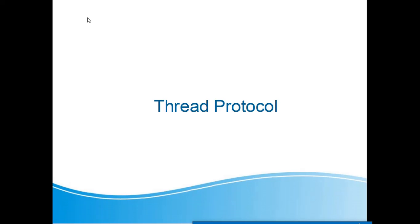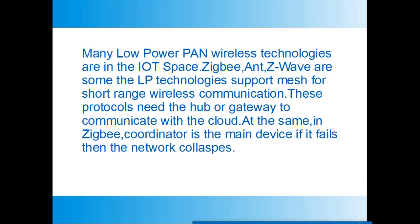Welcome back. Today we are going to see what is Thread Protocol. We see many low power PAN wireless technologies in the IoT space — protocols like Zigbee, ANT, and Z-Wave. These technologies support mesh for short range communication, but they need a hub or gateway to communicate with the cloud. In Zigbee, a coordinator is a must — if the coordinator fails, the entire network collapses. If one device wants to communicate with another, it has to go through the root of the coordinator. Let us see whether Thread Protocol solves all these problems.